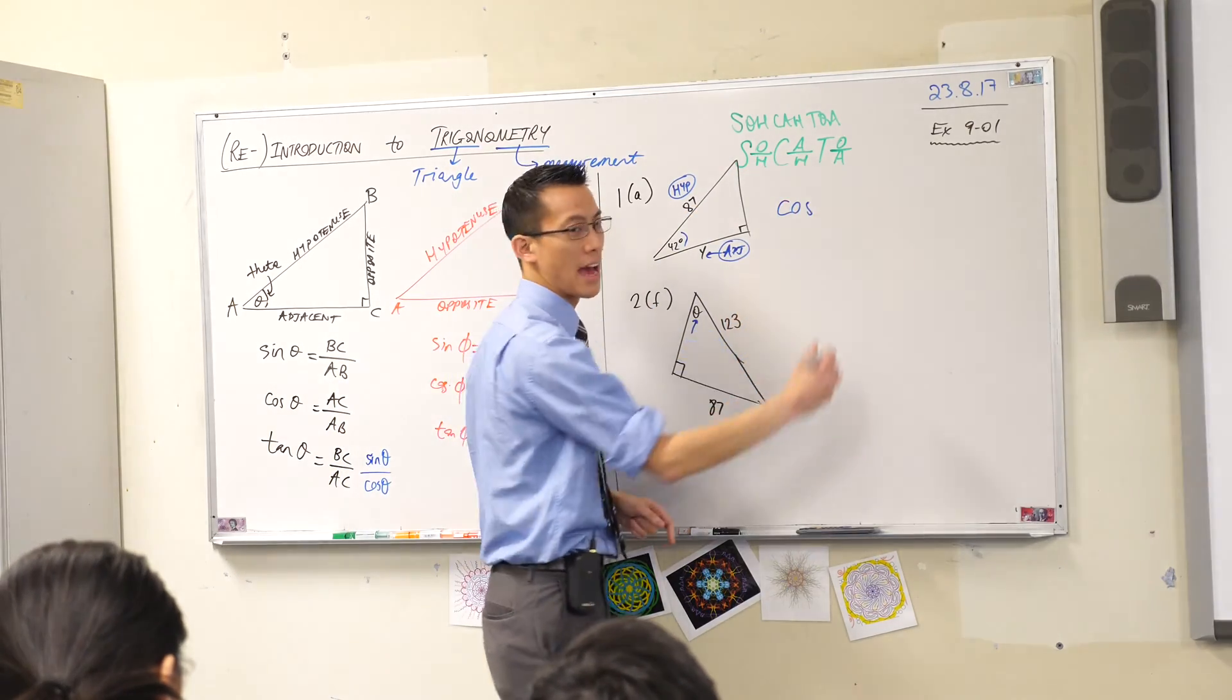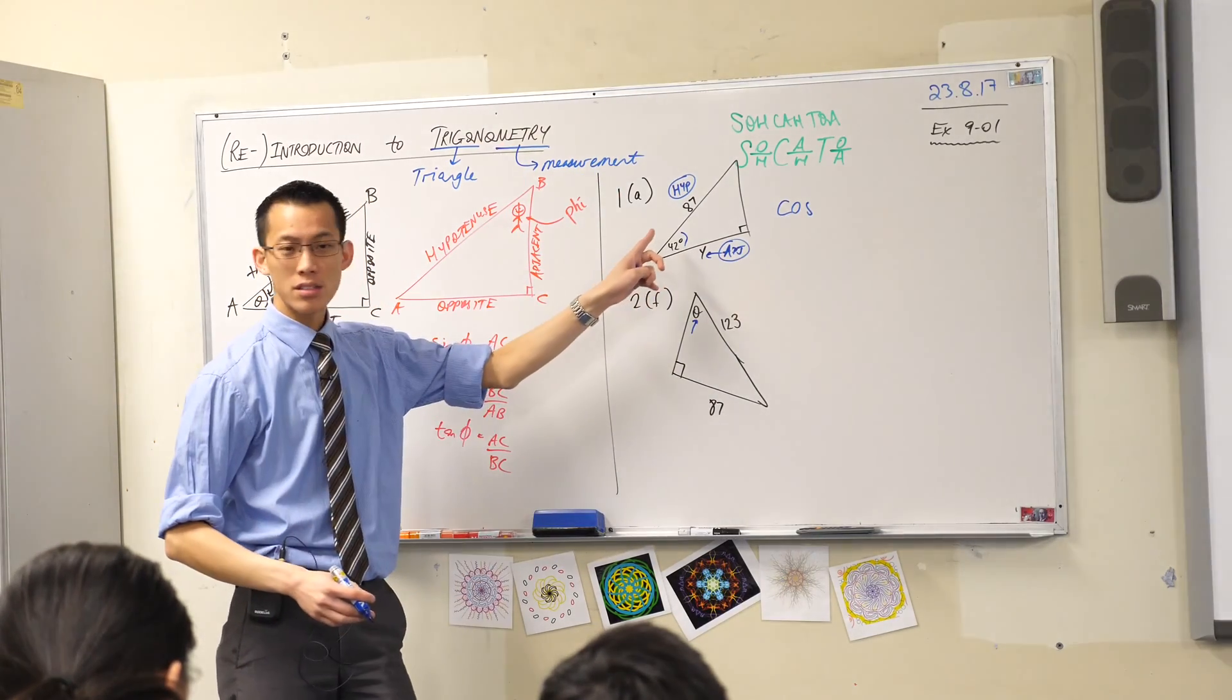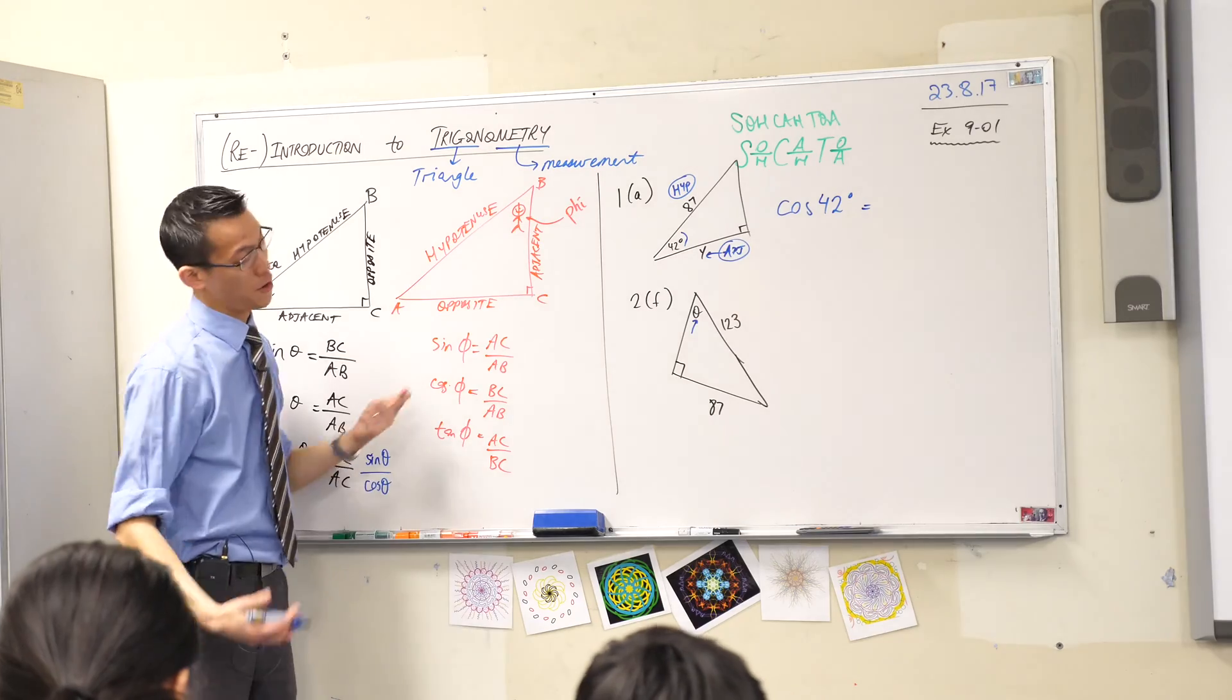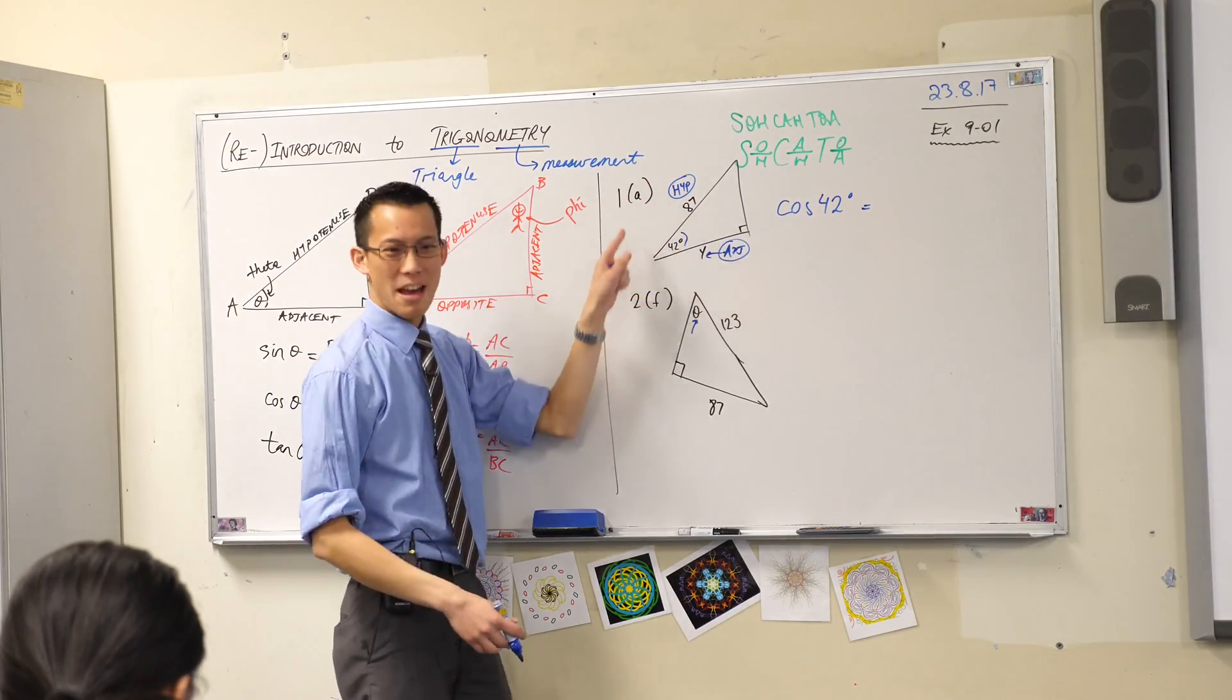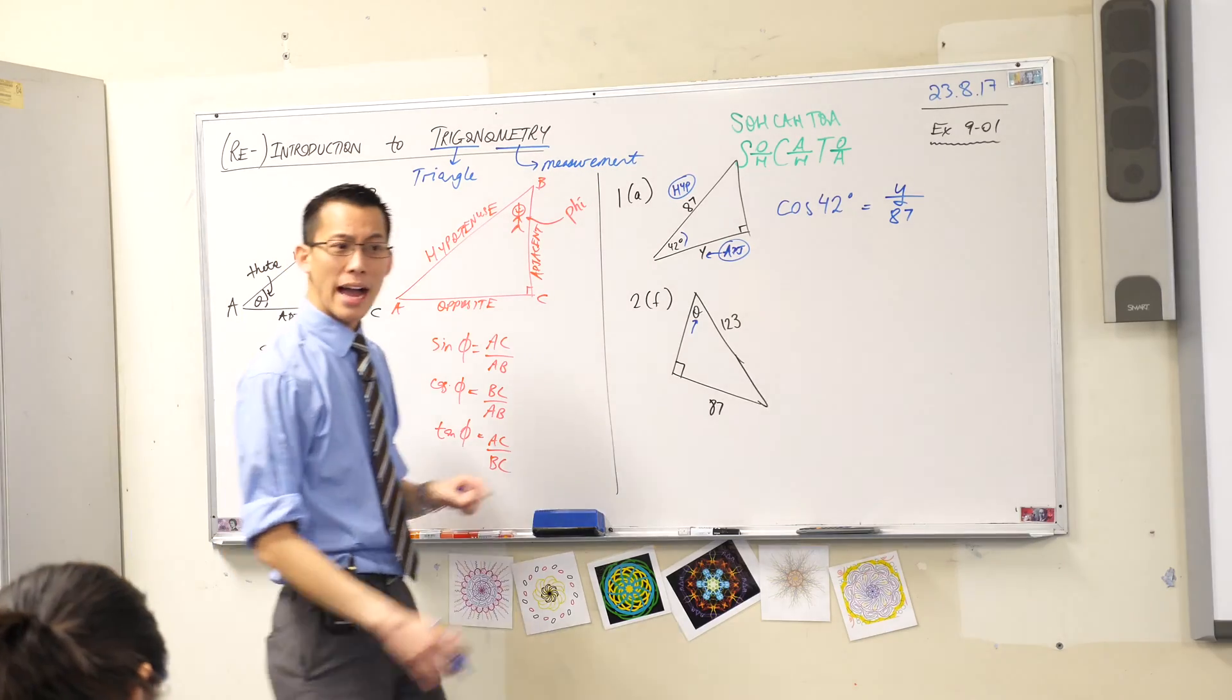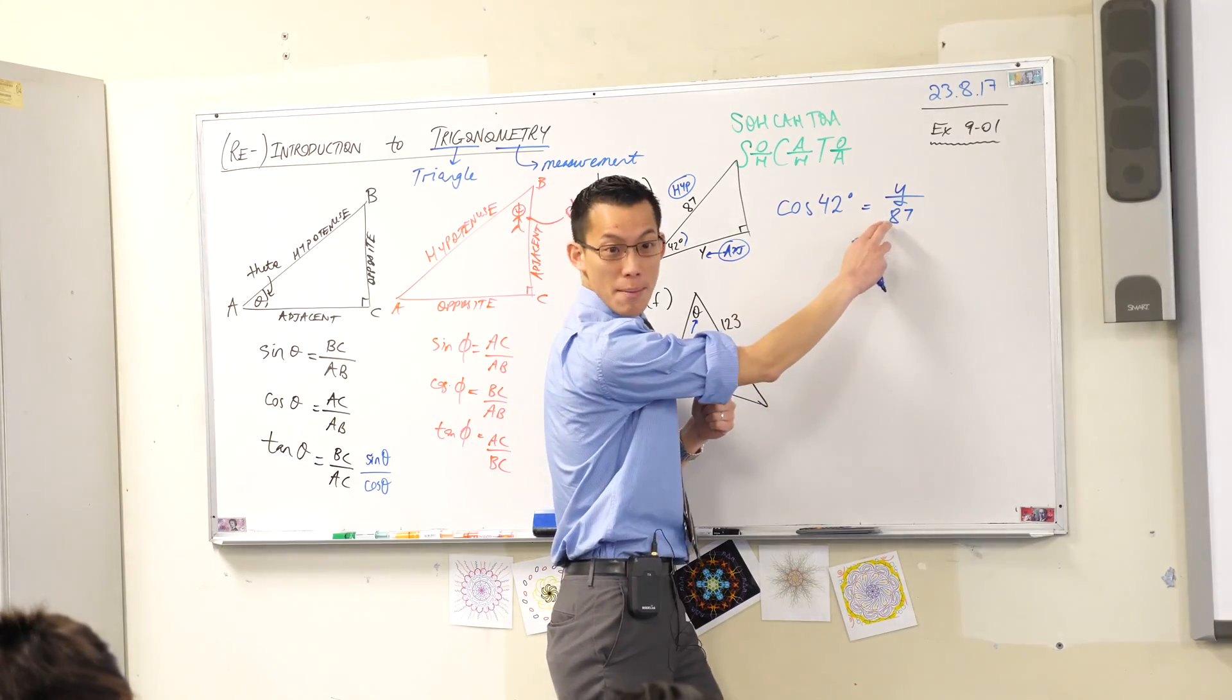So I can write an equation now with cos in it that relates all the information I have in the question. Cos of 42 degrees is equal to adjacent over hypotenuse: y over 87. You clear with that? I can rearrange a tiny bit to make y the subject. What will I do to both sides? I should multiply by 87. I'll put y on the left-hand side while I'm at it.